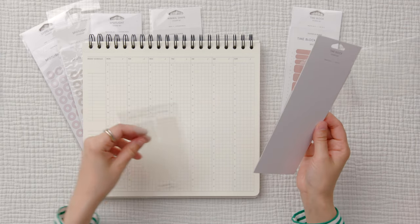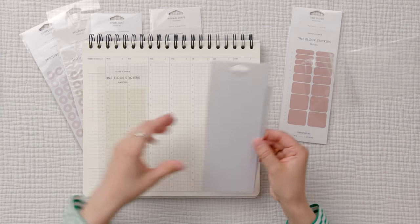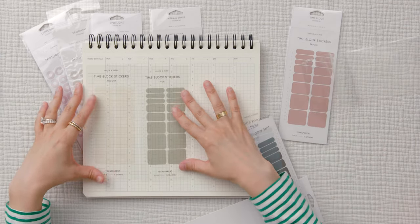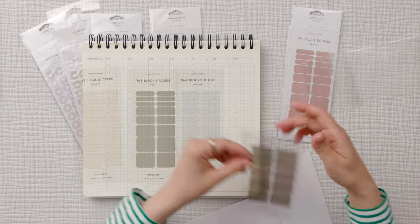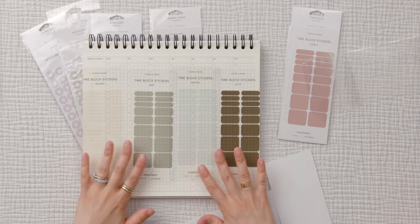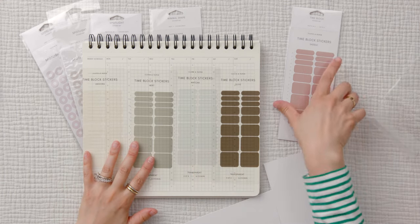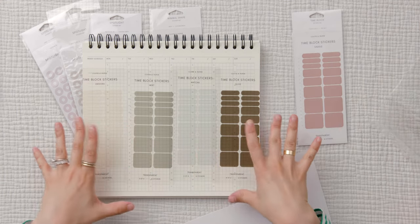This next one here comes with Angora, Vert, Matcha—that's a cute one—and then Olive. I think this is my favorite one. I haven't even seen this third one yet but I'm vibing with this one here.